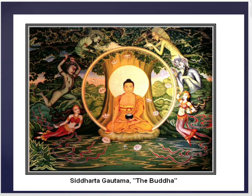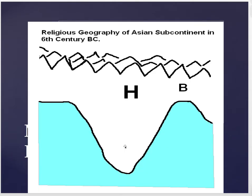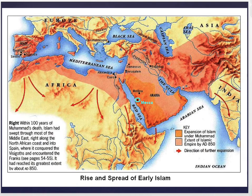That is where Buddhism starts. You can see by this map the Indian subcontinent — you have the Hindu core of India running along the Ganges, which we'll talk about soon. Buddhism roughly starts in this portion of the Indian subcontinent in the sixth century BC.